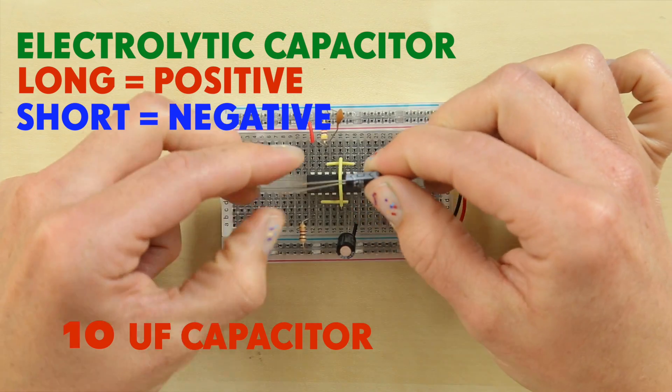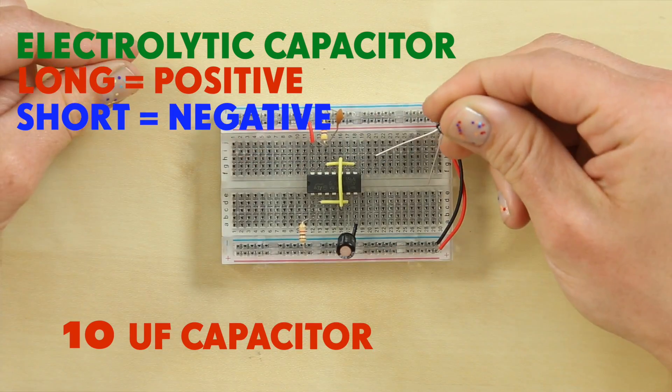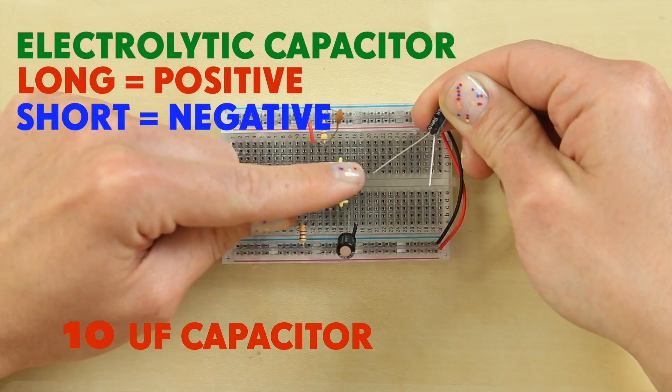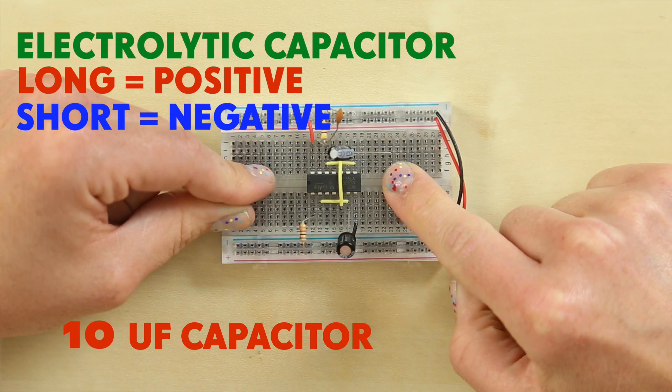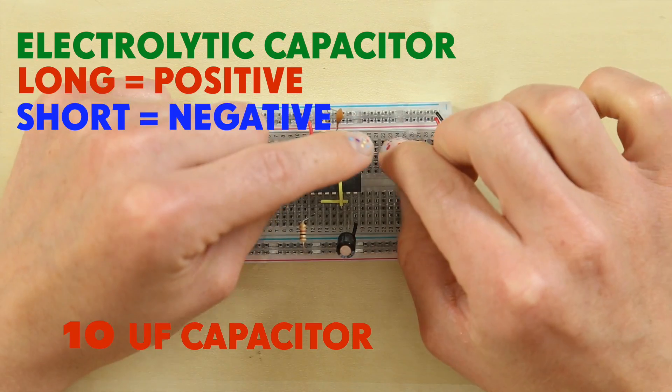Then we have our 10UF capacitor. It's the thinner one. Take the positive leg of the 10UF capacitor and connect it to pin 9 of your IC chip. Then place the negative leg a few rows along in your board.